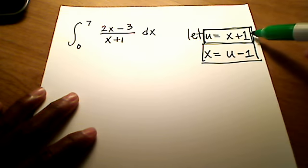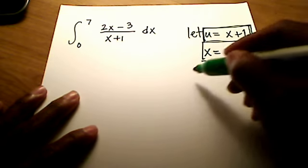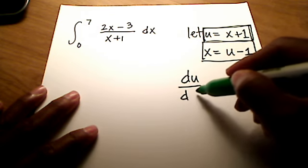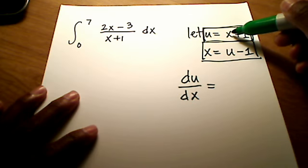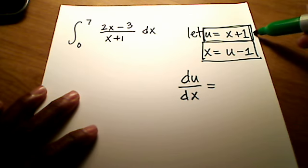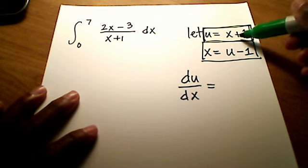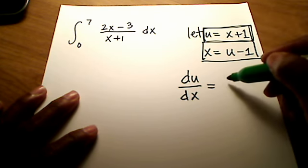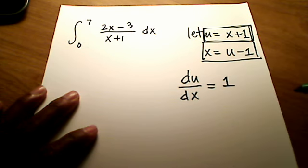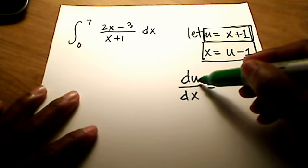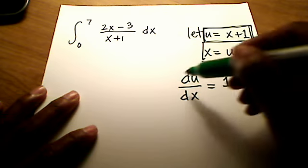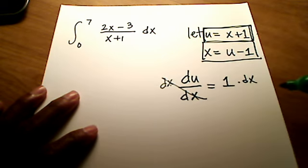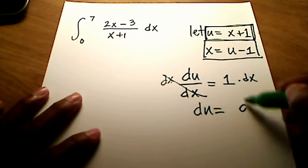Let's go back to our original substitution: u is equal to x plus 1. Let's find out what du — the derivative of u with respect to x — is. The derivative of x plus 1 is simply 1, because the derivative of the constant is 0 and the derivative of x has coefficient 1. Multiplying both sides by dx gives us du is equal to dx.